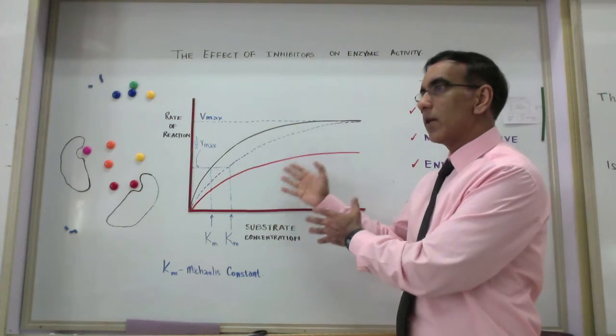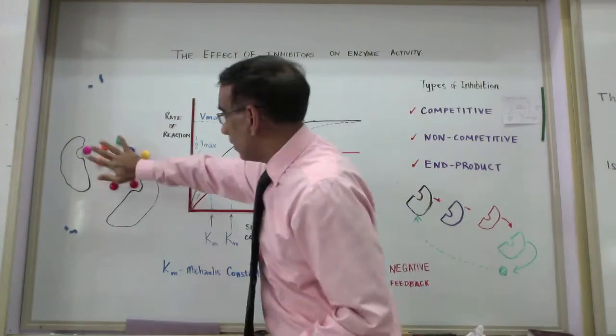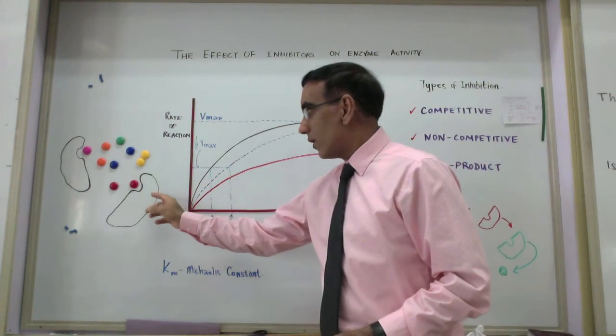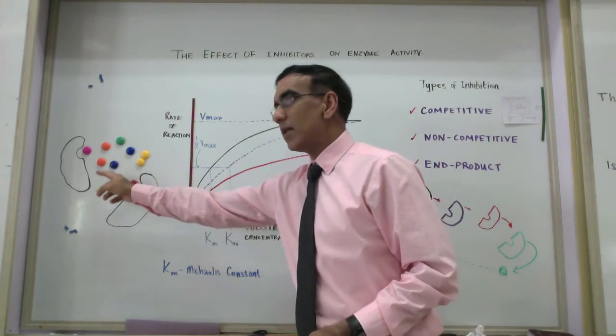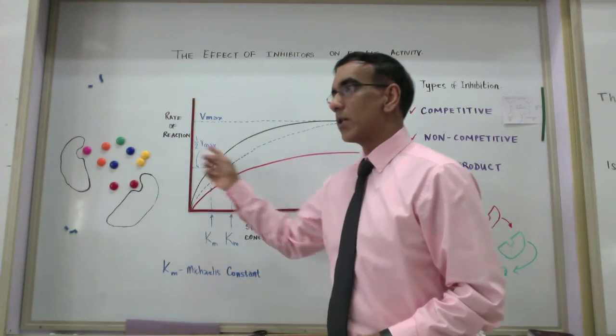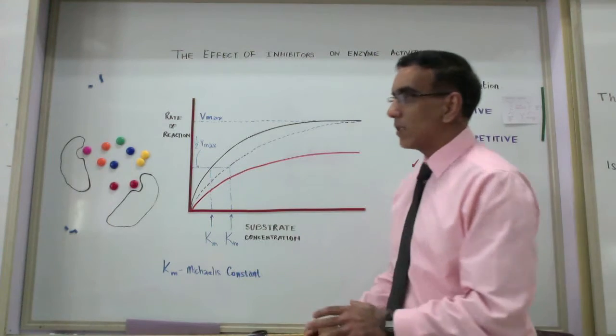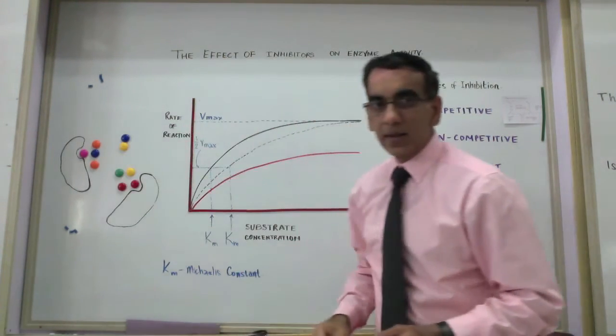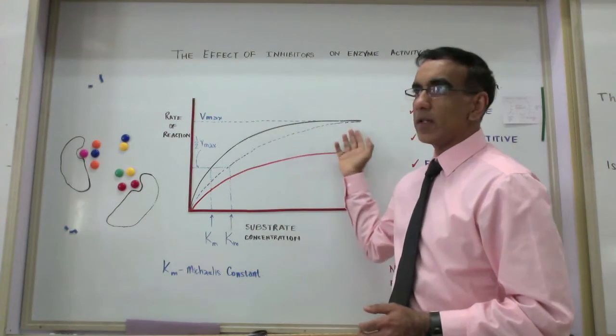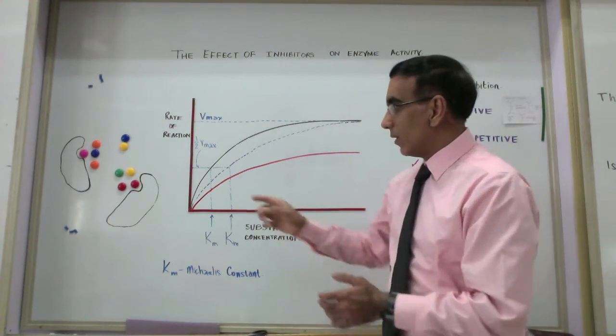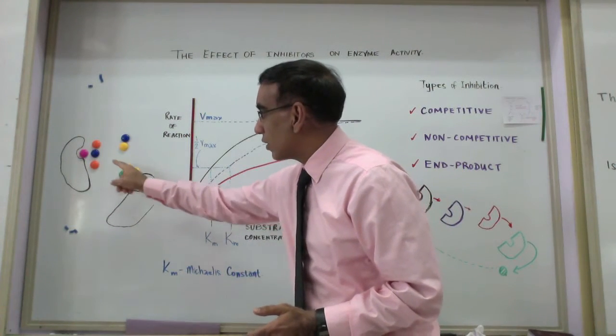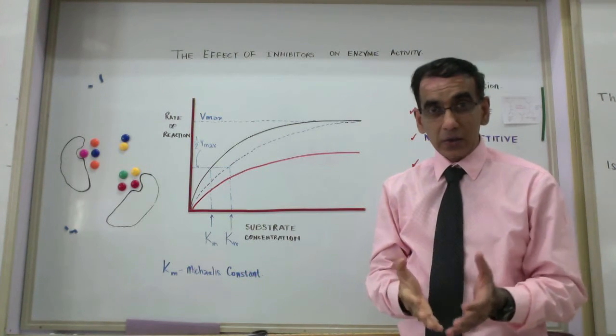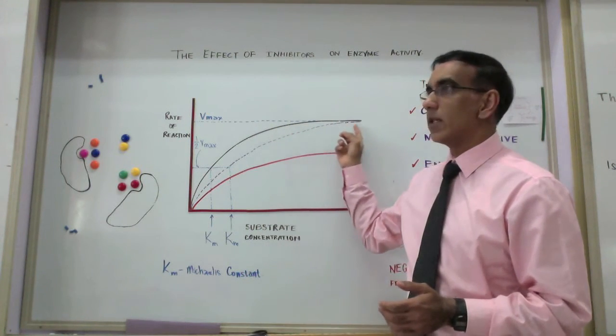But continuing to increase the substrate concentration indefinitely would ultimately lead to no significant change in the rate of the reaction. Because once you have a limited amount of enzyme, and the only thing that's being changed is the substrate, the point will come where the active sites become saturated or overwhelmed with substrate. And at this point, it would make little or no difference to add additional amounts of substrate, for the active sites are already surrounded by large amounts of substrate molecules, and in a sense, they are overwhelmed by this additional substrate, leading to no significant increase in the rate.